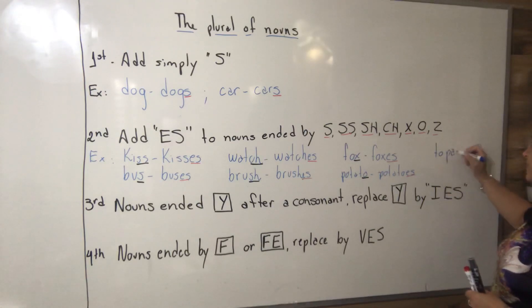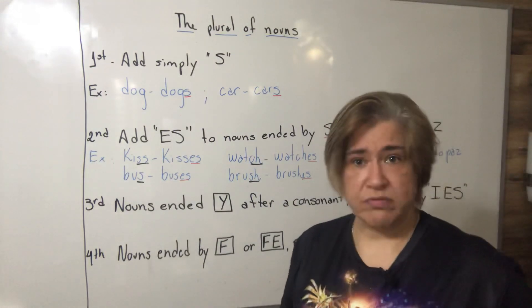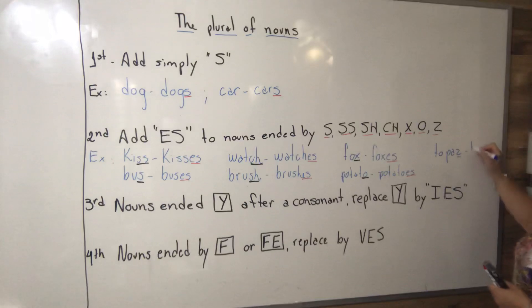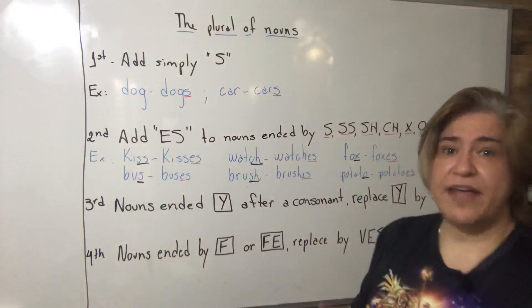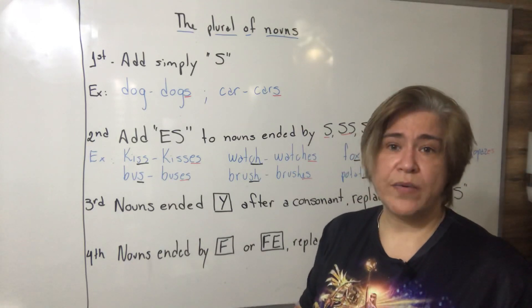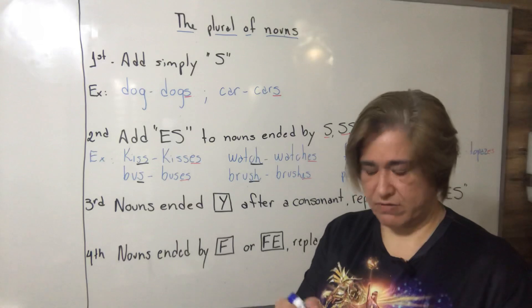Now the word Z - I have here topaz. Topaz is pedra topázio, and finishes in Z, so the plural is topazes. I have two earrings with two topazes. We have buzz, that is zunido, buzzes.